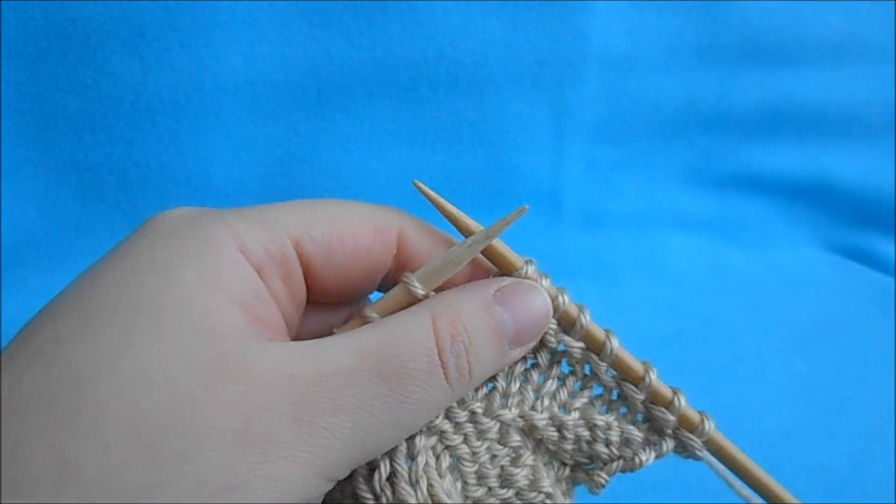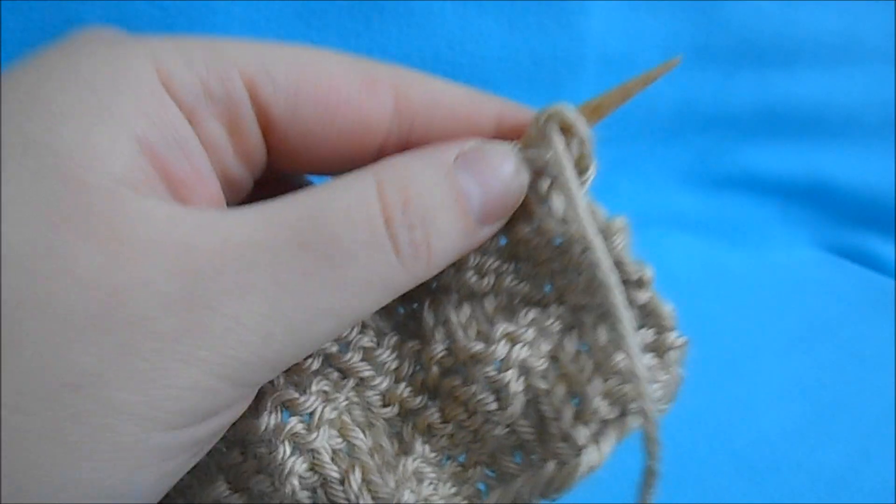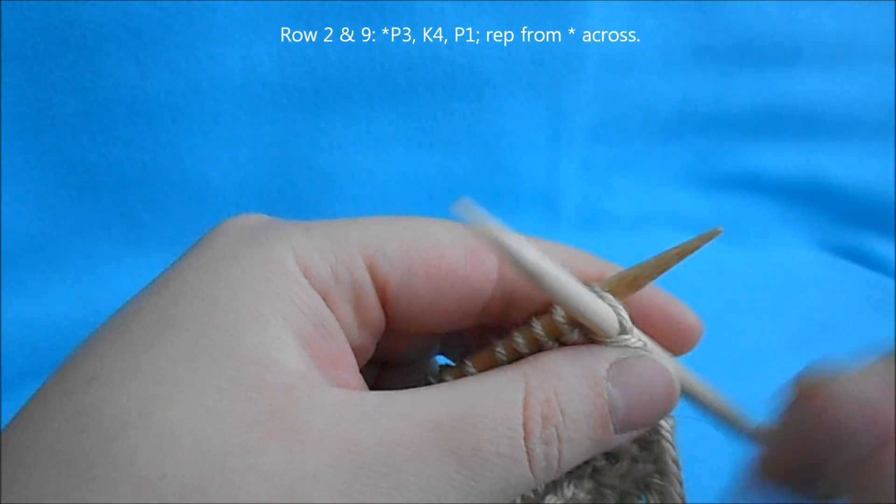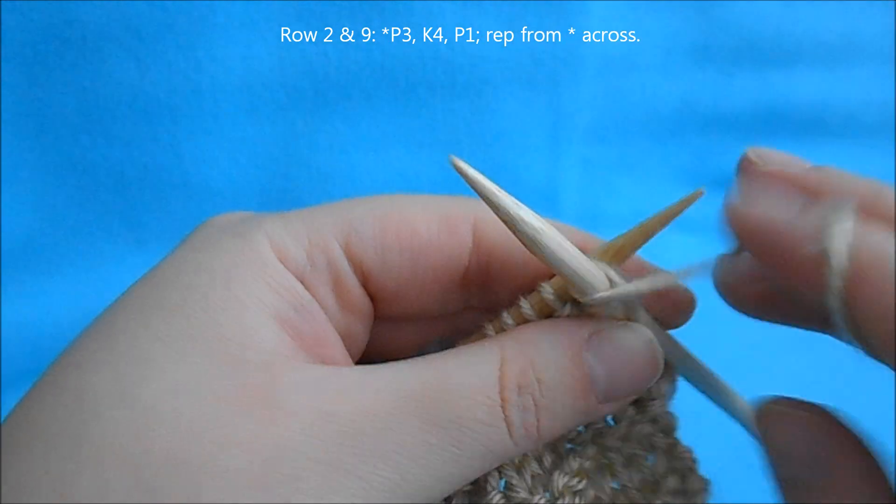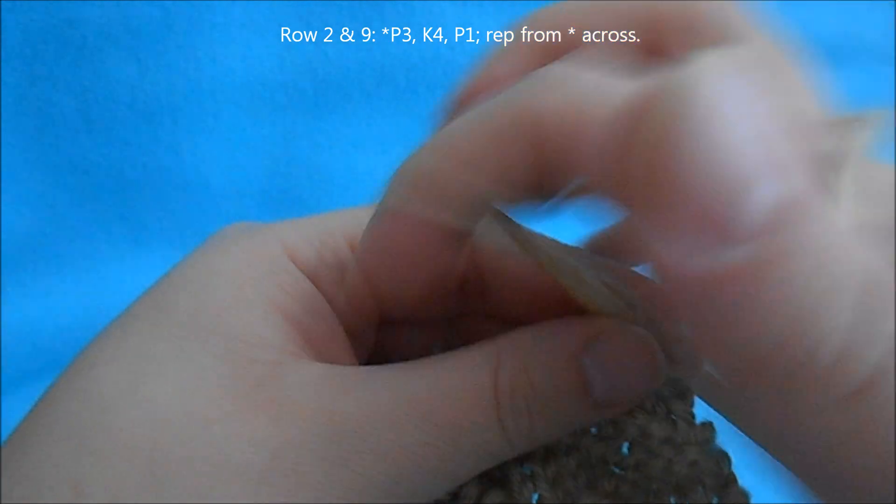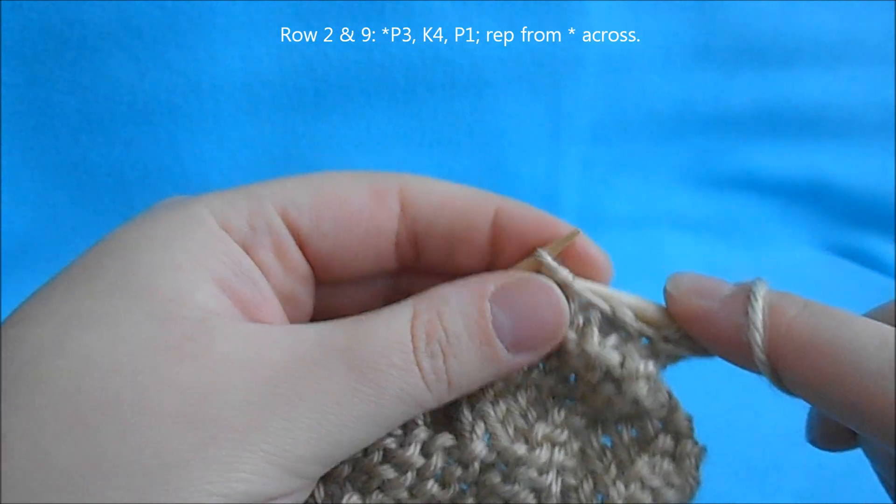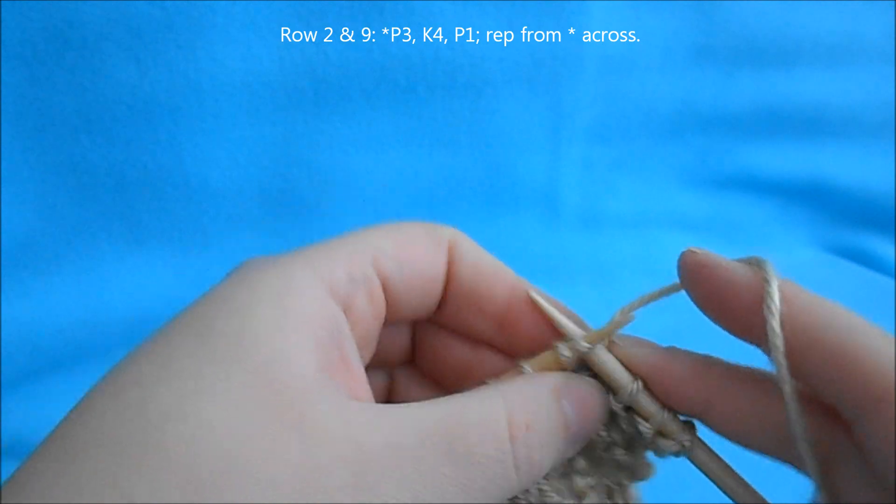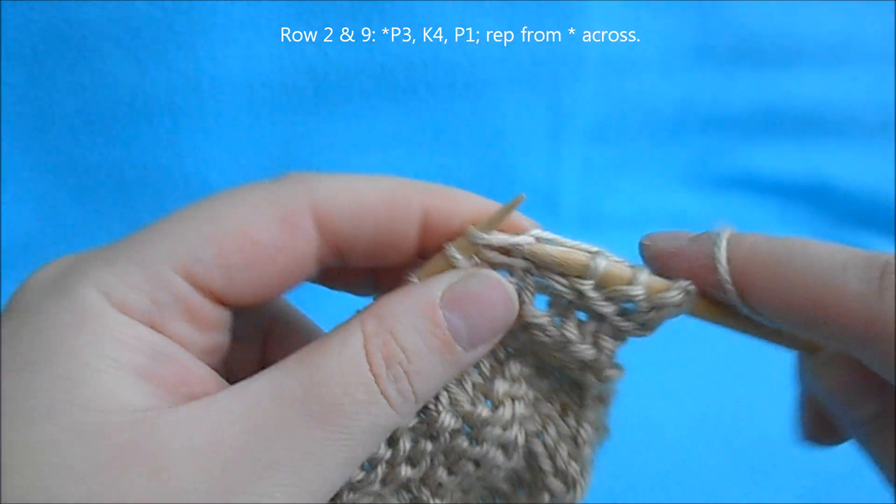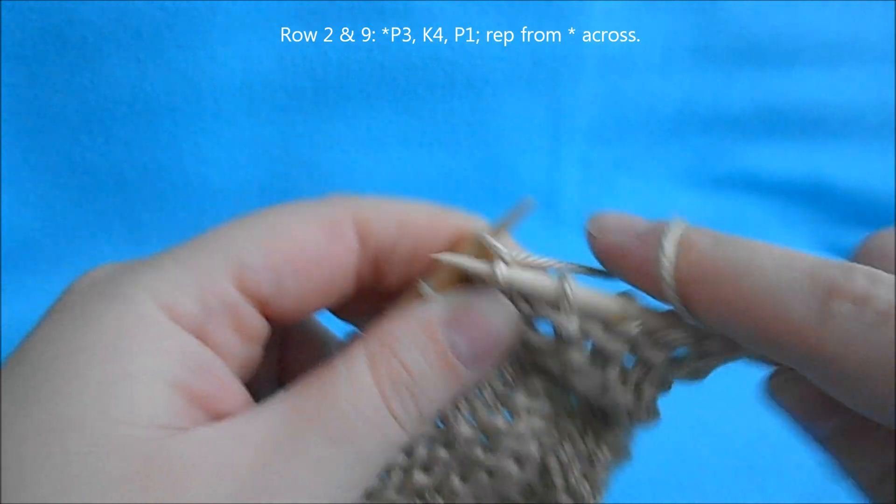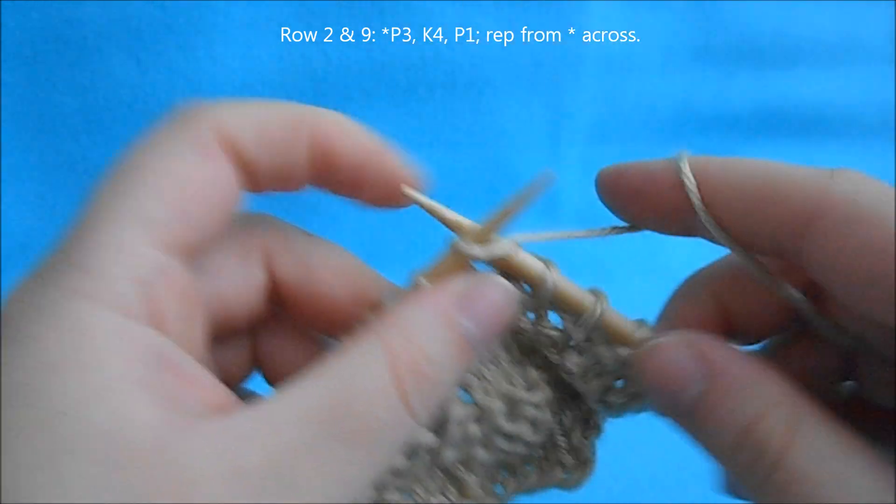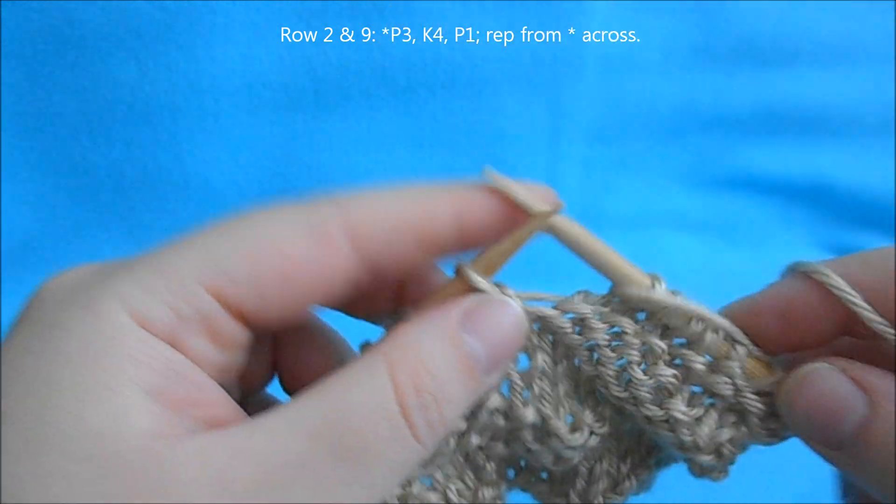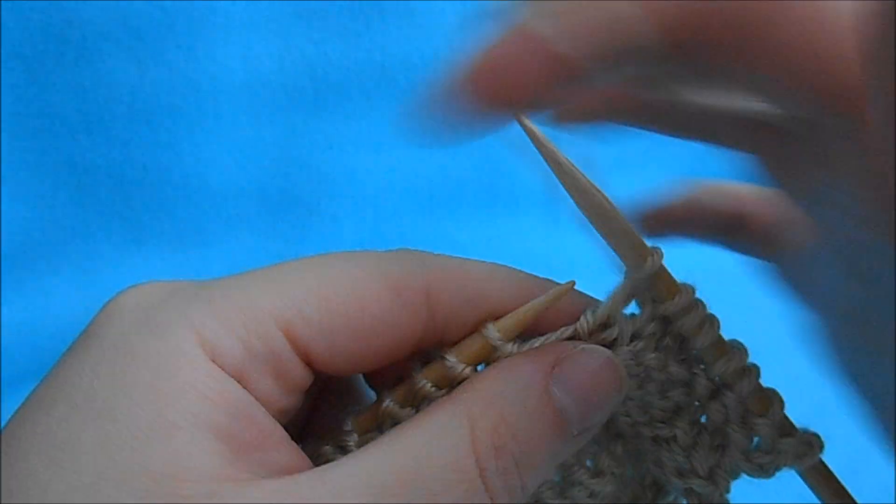For rows 2 and 9, we're going to repeat the same pattern of purl 3, knit 4, purl 1, and repeat that all the way across.